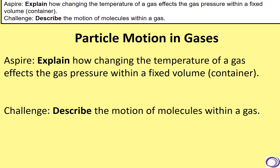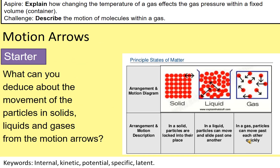The two things we're going to look at: the challenge is to describe the motion of molecules within a gas, and then the aspire is to explain how changing the temperature of a gas will affect the pressure within a fixed container or fixed volume — something that is closed where the gas can't escape. Looking at the diagrams on the right-hand side of your screen, what can you tell me about the movements in solids, liquids, and gases just from the arrows?